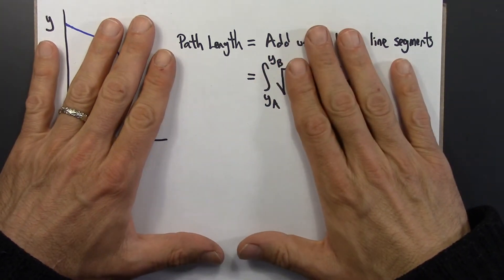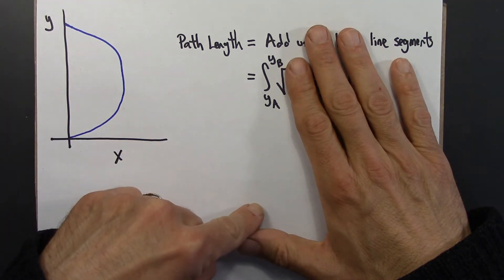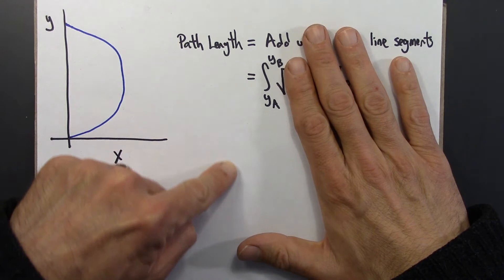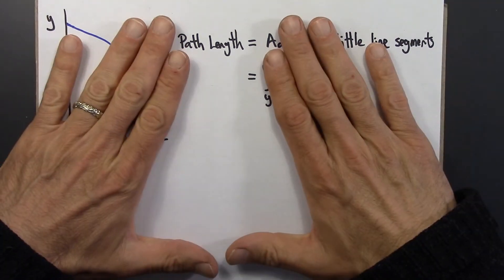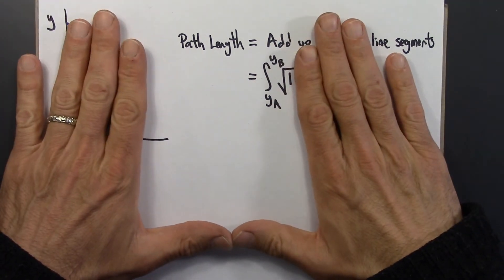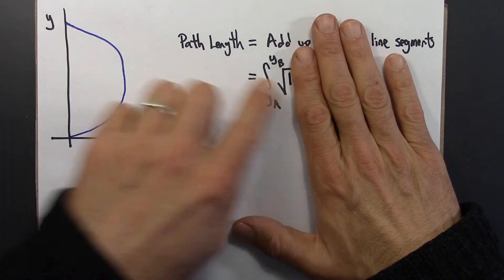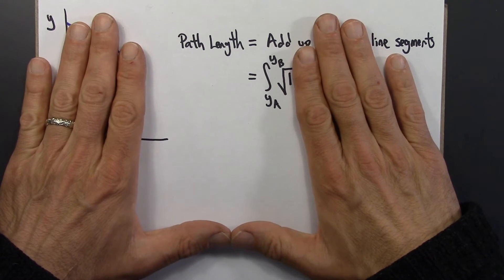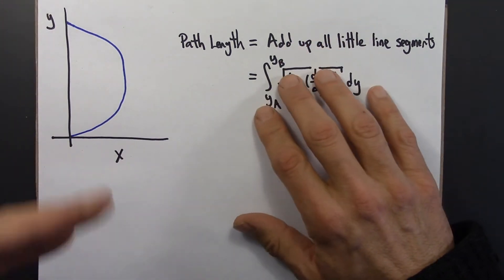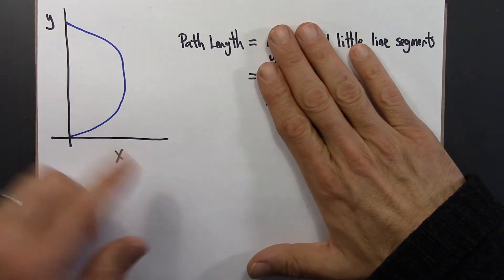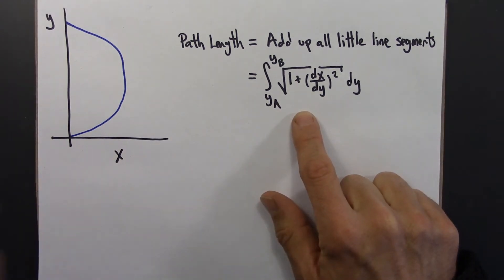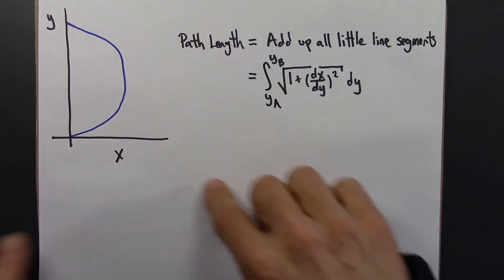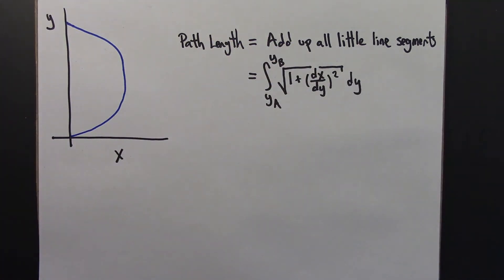The key idea is: you're trying to add something up, but the thing you're adding is changing as you add it. In the irregular theater, the number of seats per row changes front to back. In the rectangular theater, you could add seven plus seven plus seven ten times — that's just multiplication, or repeated addition. When the quantity is changing, that's exactly what a definite integral is. In our case, the hypotenuses are changing as we add them up along the y-axis, which is why we need calculus.